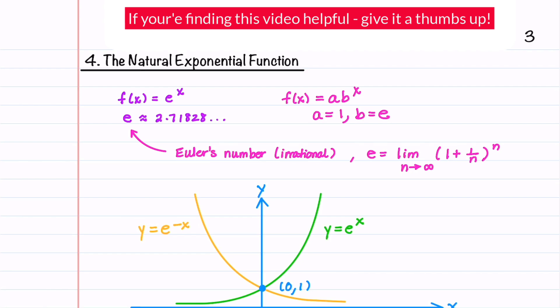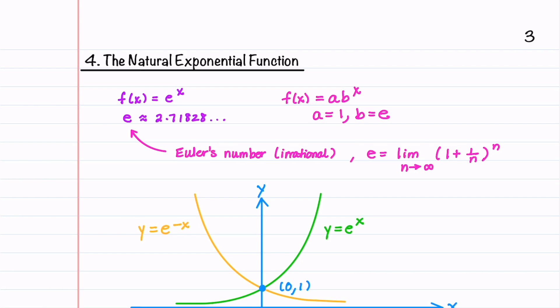The last topic that we're going to go over is the natural exponential function. This function is used widely in mathematics and in science, engineering, and business. It's written as f of x equals e raised to the x. It's just a special case of the exponential function a times b to the x where a equals one and our base b equals e. E is called Euler's number and it's an irrational number equal to 2.71828 and then it just goes on with more numbers. If you go on to study calculus, you'll see e defined as the limit as n goes to infinity of 1 plus 1 over n raised to the n.